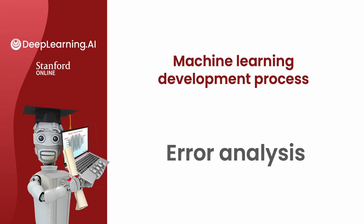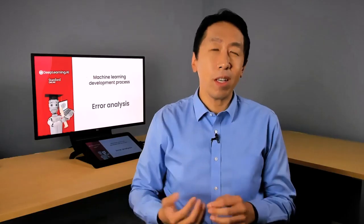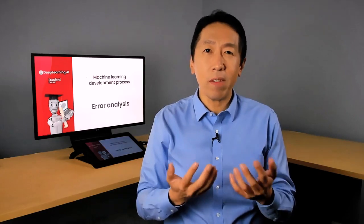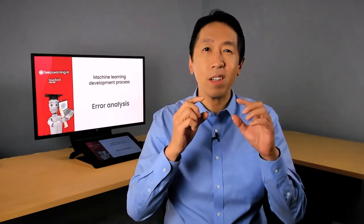In terms of the most important ways to help you run diagnostics to choose what to try next to improve your learning algorithm performance, bias and variance is probably the most important idea, and error analysis would probably be second on my list. So let's take a look at what this means.